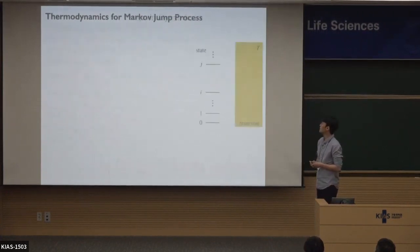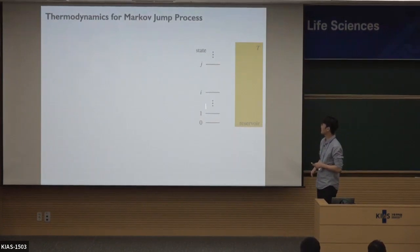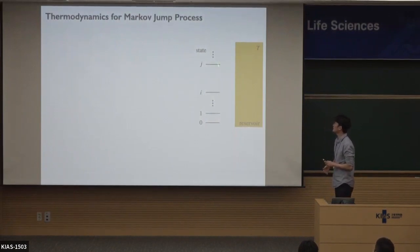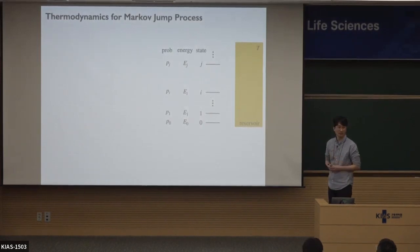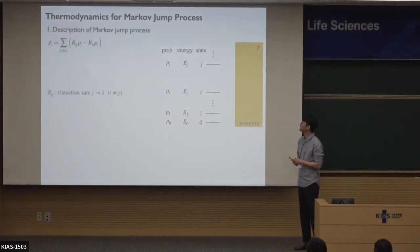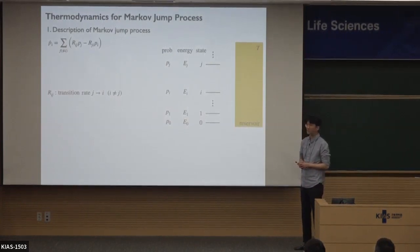The Markov jump process has a discrete state. Let's say this is a discrete state from 0 to 1 — these are indices for states. The system is in contact with a reservoir with temperature T. Here, this is the energy level, and this denotes the probability for each state. With this setup, the system dynamics can be described by the master equation. Here, R_ij means the transition rate from state J to state I.